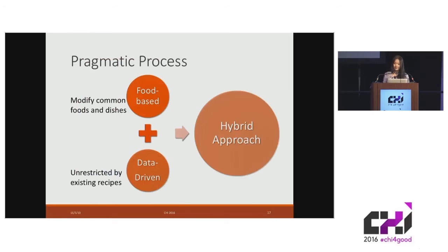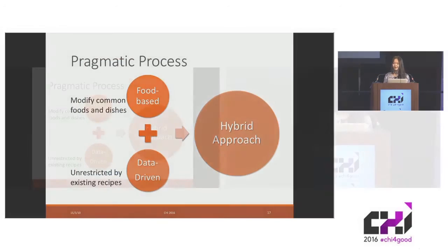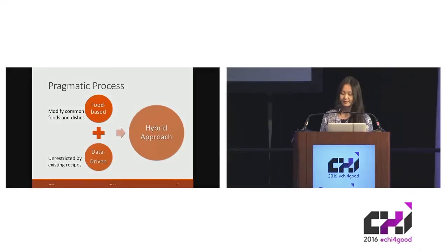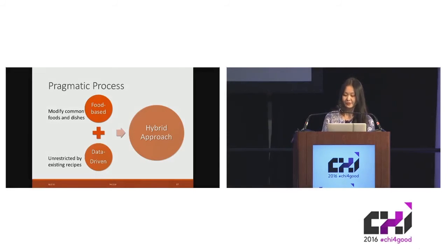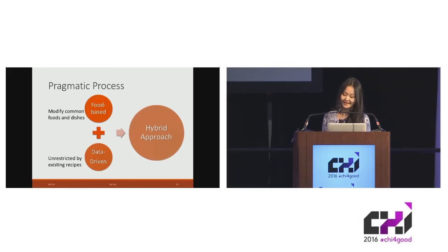We propose three pragmatic processes of data edibilization: a food-based approach that modifies existing recipes of common foods and dishes; a data-driven approach that creates novel edible representations unconstrained by existing recipes; and a hybrid approach that combines the two methods.